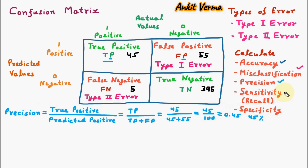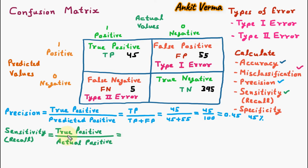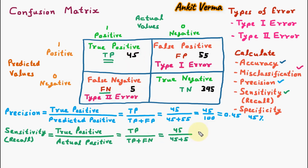Next we are learning sensitivity or recall, which is equal to true positive divided by actual positive. That is TP divided by actual positive — the actual positives are TP plus FN — so it equals 45 divided by 45 plus 5, which is 45 divided by 50, equal to 0.90, or 90 percent sensitivity or recall.